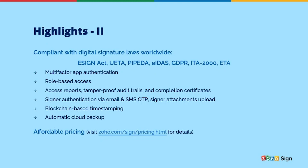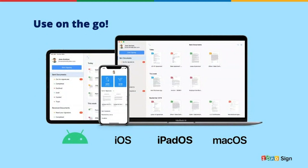One of the biggest highlights of Zoho Sign is that it comes at a very affordable price point for businesses. You can visit the link on screen for our pricing plans. In addition to our web application, Zoho Sign is available as native applications for Android, iOS, iPadOS, and macOS.